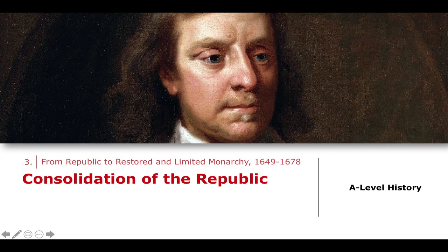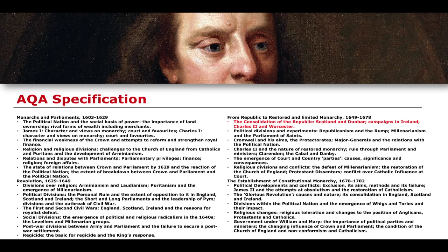Welcome back to our studies in AQA A-Level History. This lesson is going to talk about topic number three of our studies on Stuart Britain and the Crisis of the Monarchy. This topic is divided into two main sections: our discussion about the Republic and the Protectorate and the various different Parliaments that existed under Cromwell, which covers the first half of this chapter, bringing us to around the early to mid-1650s.